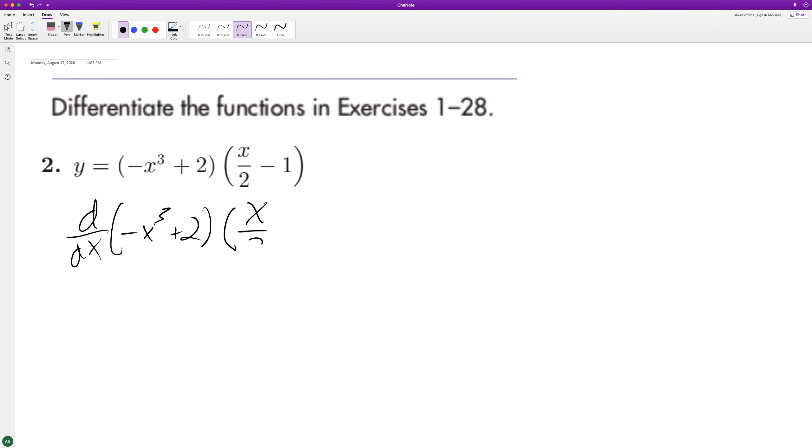times x over 2, which is the same thing as 1 half times x, plus negative x cubed plus 2 times the derivative of x over 2, which is just going to be one.